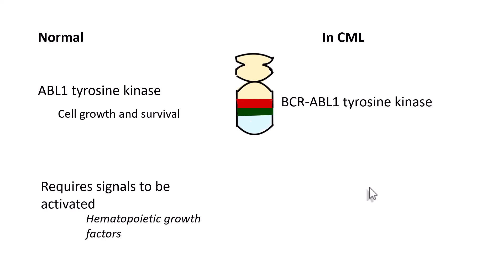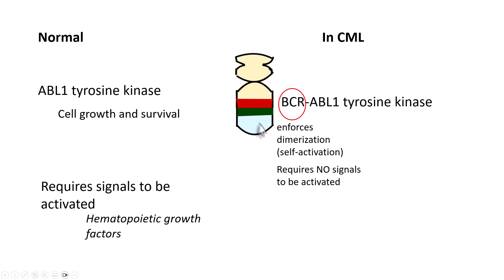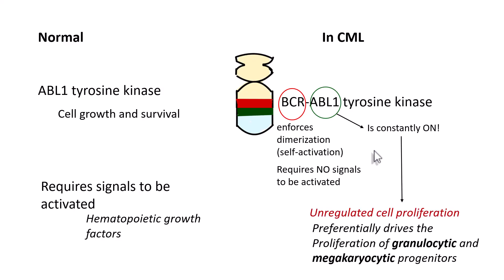We know that there is a fusion gene where the BCR part of the tyrosine kinase enforces dimerization — called self-activation — and activates the ABL1 tyrosine kinase without any external signals. Hence, the ABL1 tyrosine kinase is constantly on with no feedback mechanism to stop it, resulting in unregulated cell proliferation. For unknown reasons, the preferential proliferation is of granulocytic and megakaryocytic precursors — not erythroid progenitors — and that is why the WBC count and platelet counts are increased.